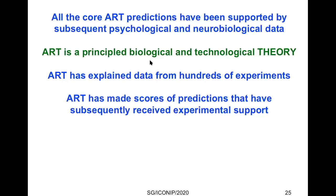ART is a principled biological and technological theory, unlike backprop and deep learning, which are just algorithms. ART has explained data from hundreds of experiments and made scores of predictions that have subsequently received experimental support.